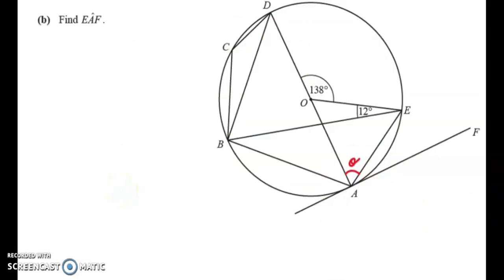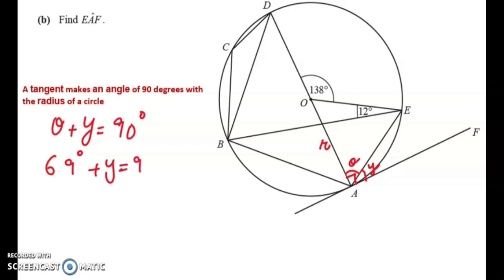In the second part of the question, we have to find angle EAF. This angle EA is being made with this tangent EAF, so we mark this angle with Y. There is a property of tangent that states: a tangent makes an angle of 90 degrees with the radius of the circle. This tangent AF makes an angle of 90 degrees, so theta plus Y equals 90 degrees. We already found theta was 69 degrees. Hence angle Y equals 21 degrees, which is equal to angle EAF.